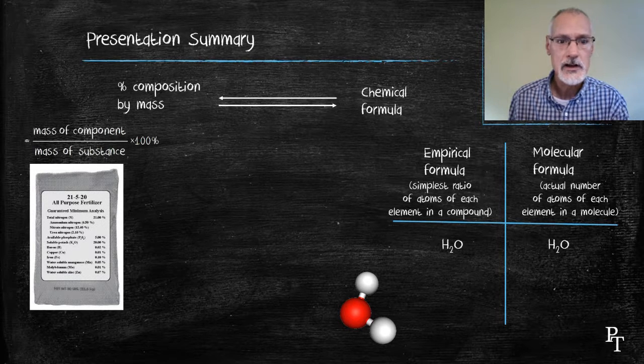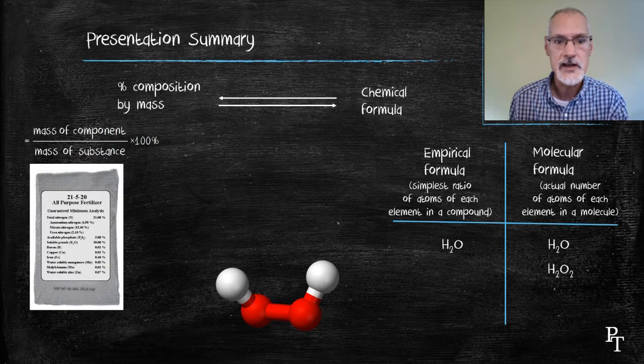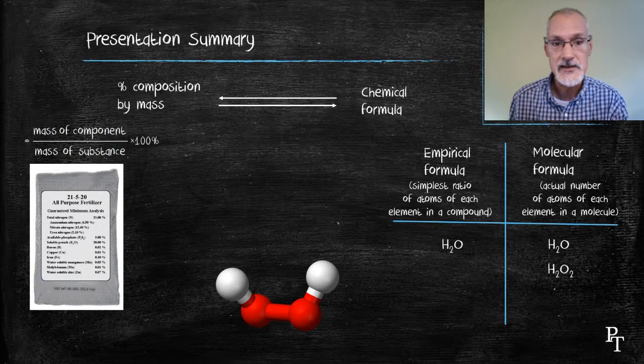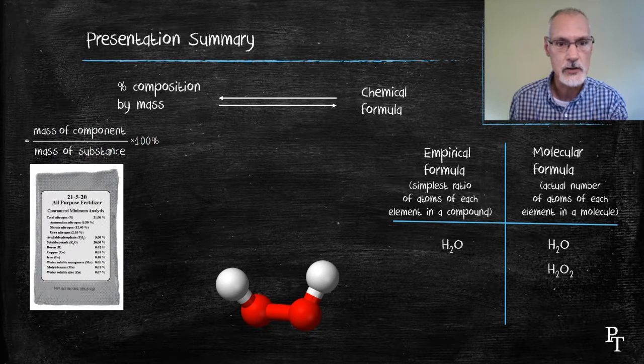But consider hydrogen peroxide, H2O2. The actual molecule contains two oxygens and two hydrogens. If I consider the empirical formula, which is the simplest ratio, it would just be HO, one of each.